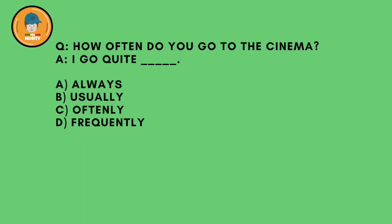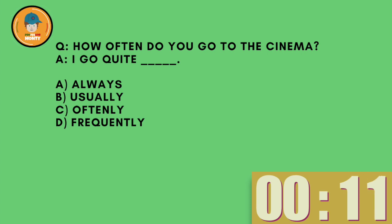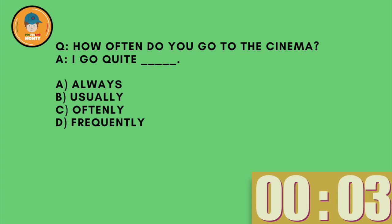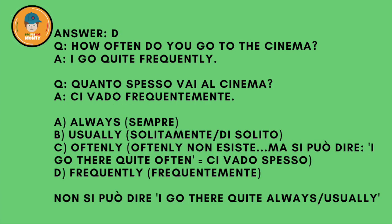Next question: How often do you go to the cinema? I go quite mmm. A: always. B: usually. C: oftenly. D: frequently. And the answer is D — frequently — it's the only one that fits here. Non si può dire 'I go there quite usually' or 'I go there quite always.' And 'oftenly' non esiste.